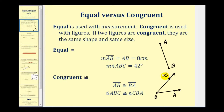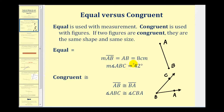Equal is used with measurement. Congruent is used with figures. If two figures are congruent, they are the same shape and the same size. So we can use the equal sign when referring to the length of a segment. Here the measurement of segment AB, or the length of AB, is equal to eight centimeters. And we can use an equal sign when giving the measurement of an angle — the measurement of angle ABC is forty-two degrees.